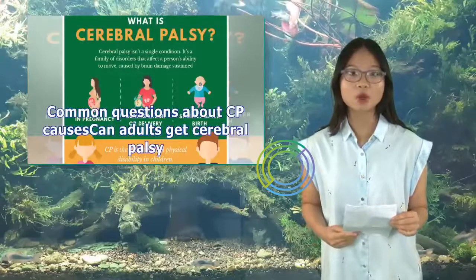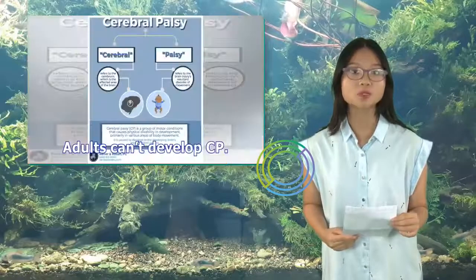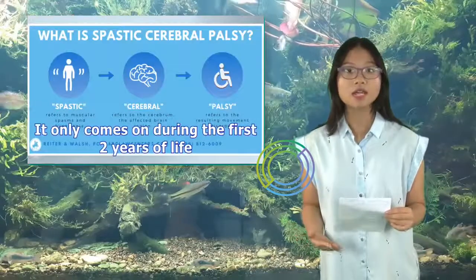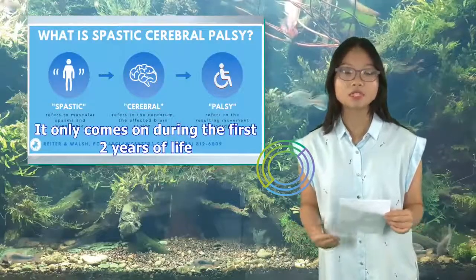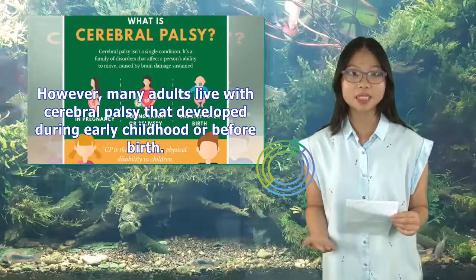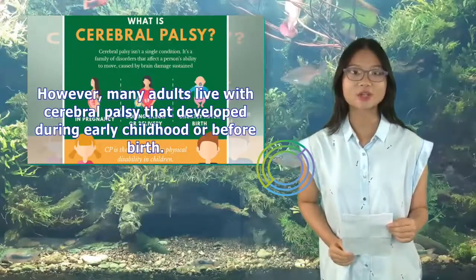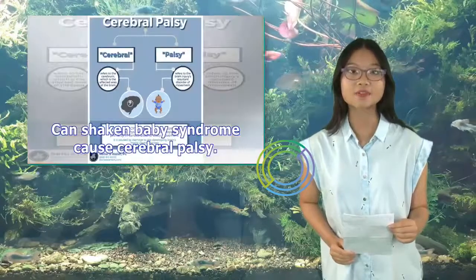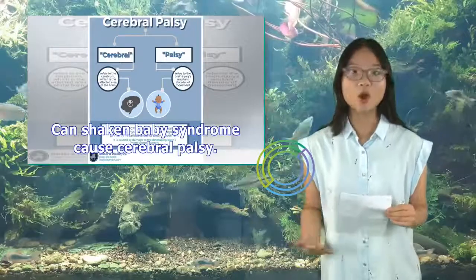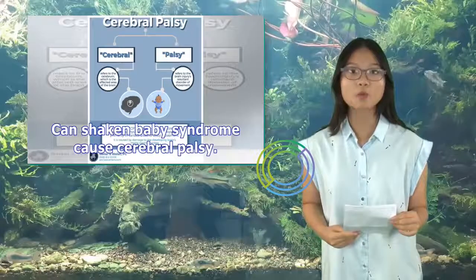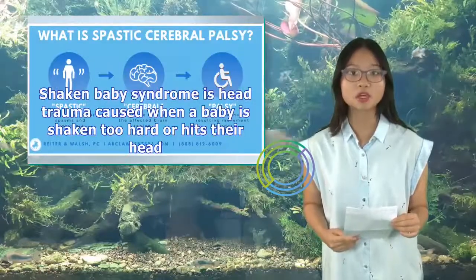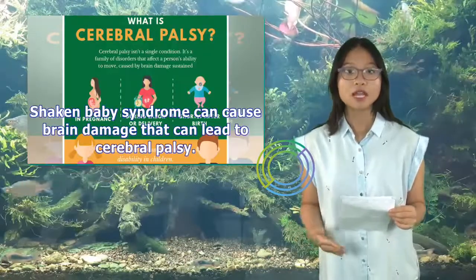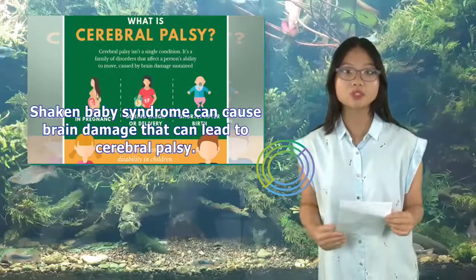Can adults get cerebral palsy? Adults can't develop CP — it only comes on during the first two years of life. However, many adults live with cerebral palsy that developed during early childhood or before birth. Can shaken baby syndrome cause cerebral palsy? Shaken baby syndrome is head trauma caused when a baby is shaken too hard or hits their head, and it can cause brain damage that leads to cerebral palsy.